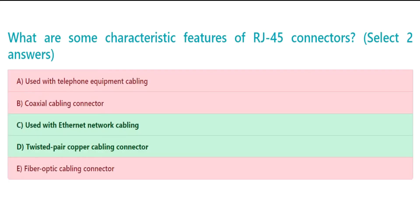The correct answers are C. Used with Ethernet network cabling, and D. Twisted pair copper cabling connector.